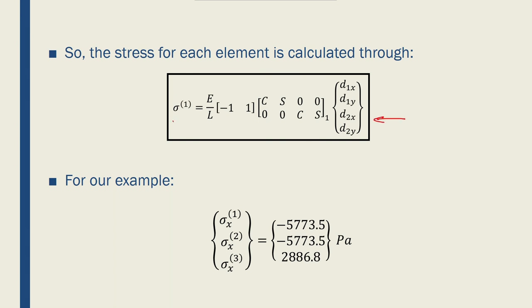So in order to find the stresses inside the elements of a truss, I use this equation. E over L is the Young's modulus over the length of the bar. And the cross-section is actually buried in this term, stress. Minus 1, 1. This is a 1 by 2 row matrix.